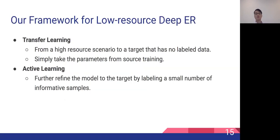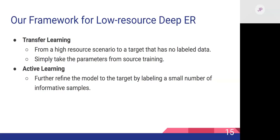Our framework for low-resource deep entity resolution consists of two orthogonal approaches. The first is transfer learning, where we develop a deep learning model that allows for transfer learning from a source scenario to a target scenario that has no labeled data — we simply train on the source dataset and use the same network parameters for the target. In active learning, we further refine the model by iteratively labeling a small number of informative samples from the target scenario.